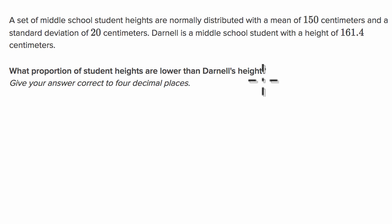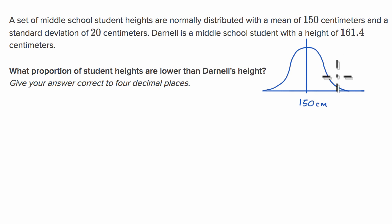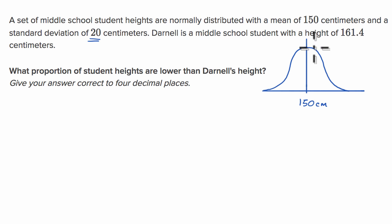So let's think about what they are asking. Heights are normally distributed, so it would have a shape that looks something like that — that's my hand-drawn version of it. There's a mean of 150 centimeters, right over here. They tell us there's a standard deviation of 20 centimeters, and Darnell has a height of 161.4 centimeters, so Darnell is above the mean — right over here — at 161.4 centimeters.